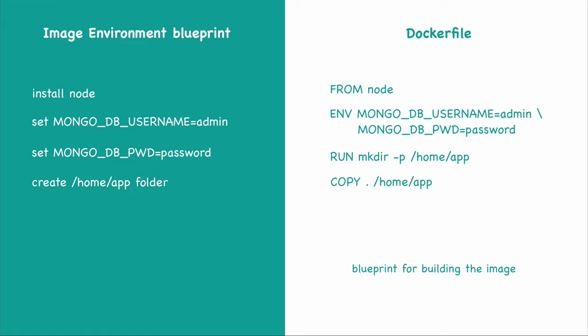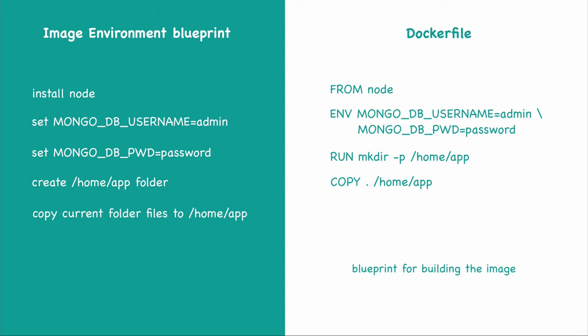We also have a COPY command. You might ask: can't I just execute a Linux copy command using RUN? The difference is that commands in RUN get executed inside of the container, whereas the COPY command executes on the host. The first parameter is the source (dot, meaning current directory) and the second parameter is the target (/home/app). So I can copy files that I have on my host into the container image — because if I used RUN cp source destination, that would execute inside the Docker container, but the files I want to copy are on my host.